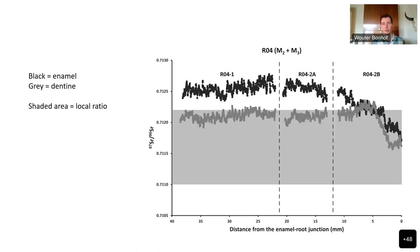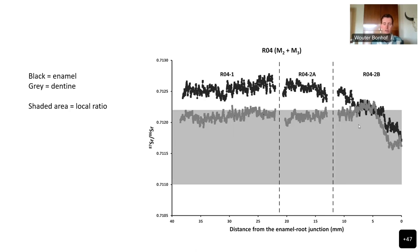A very different result was found for the reindeer, where the enamel clearly shows non-local strontium isotope ratios, but the dentine is very clearly affected by diagenetic strontium — it nearly completely agrees with the local range, whereas the enamel does not. If you were to analyze only the dentine from this reindeer, you would incorrectly assume that this individual did not migrate, whereas the enamel very clearly shows the animal moved to a different region before arriving in the Yana area toward the end of its M3.